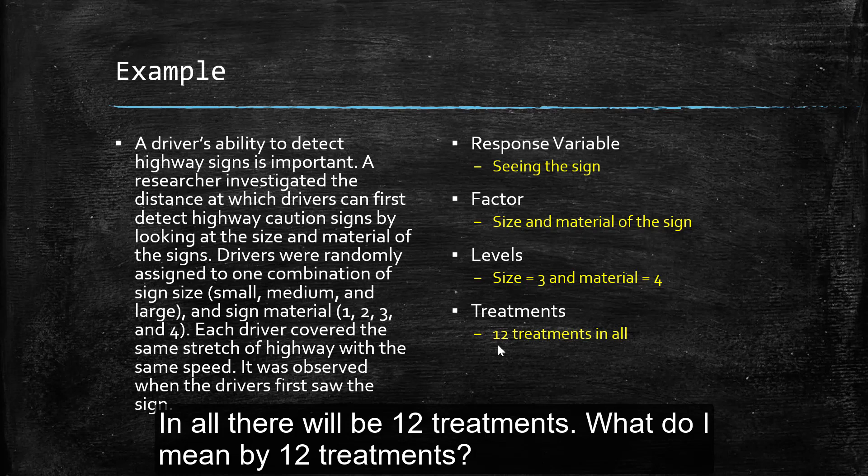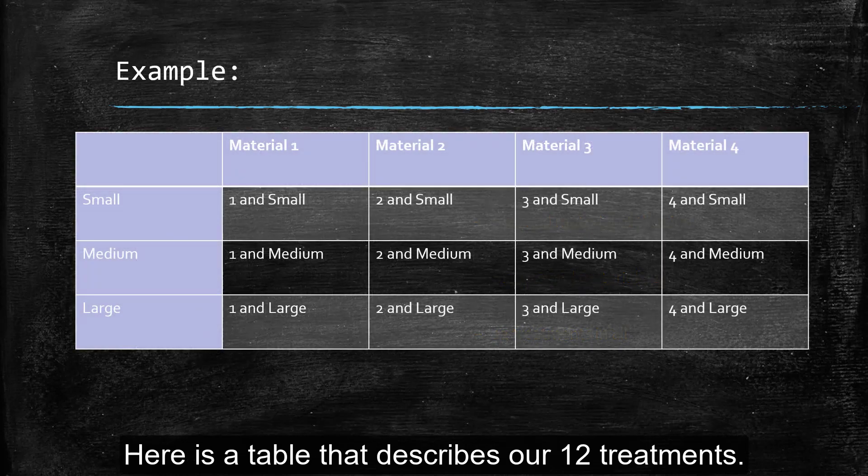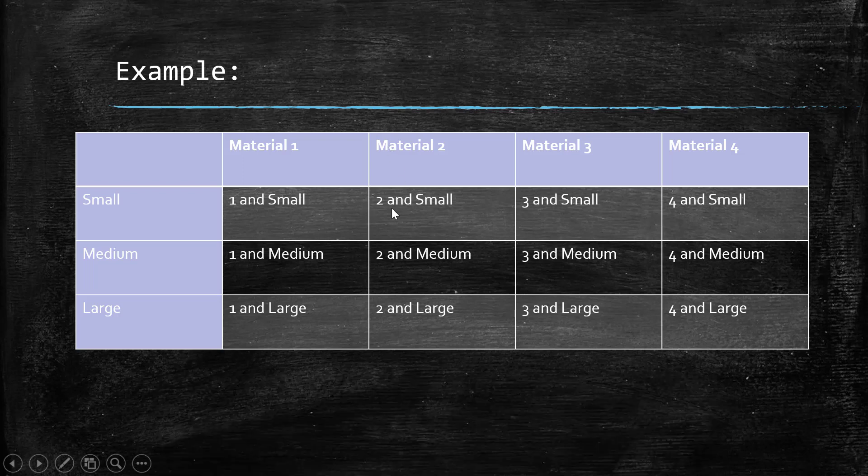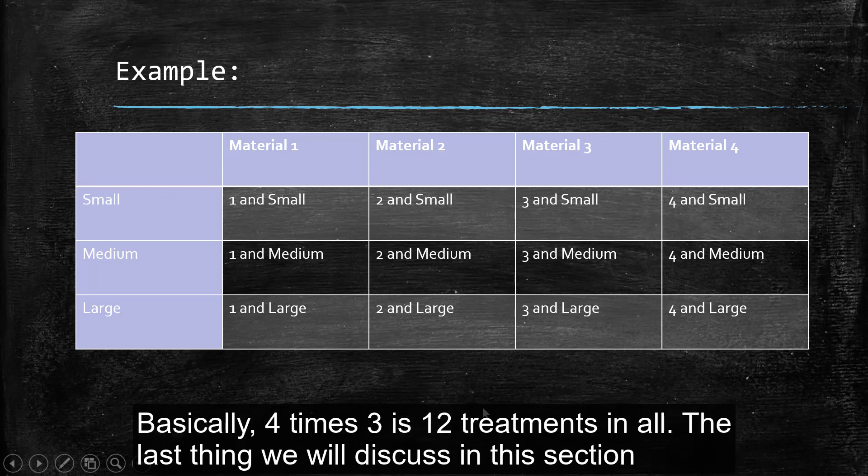So in all, there will be 12 treatments. So what do I mean by 12 treatments? Well, here's a pretty good example. So we make a table. We have materials one through four. We have our size, small, medium, and large. So we are going to have 12 different combinations of those, right? One and small, material two and small, three and small, three and medium, two and large, four and large. So four times three, there's going to be 12 treatments in all.